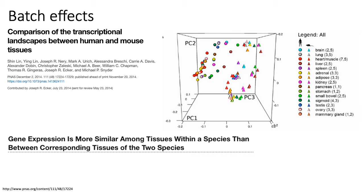A few days after this paper was published, people started digging into the data and found that a large part of the reason humans cluster together and mouse tissues cluster together is that most of the human tissues were sequenced in one lab and most of the mouse tissues in another. The lab batch effect was almost completely confounded with the species effect they were interested in. Once you correct for lab-specific differences in gene expression, you reach the opposite conclusion: tissue-specific expression is more conserved, and expression in the same tissue across species is more similar than expression across different tissues within the same species.